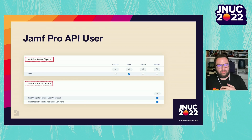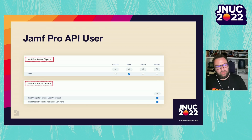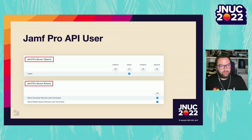For the Jamf Pro API user, we want the maximum level of security and not use our admin account. We're going to create a specific user with the minimal privileges required to do the task. In Jamf Pro server objects, when you create the API user, don't use one of the predefined templates like admin or read-only. Go to the privileges, and in Jamf Pro server objects, look at the line called 'Users' and check only the Read column. Then go to Jamf Pro server actions and you're going to need two actions: Send Computer Remote Lock Command and Send Mobile Device Remote Lock Command. We will provide a link to documentation about the API privileges required for each endpoint mapping.